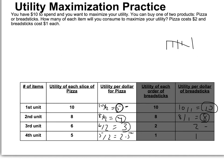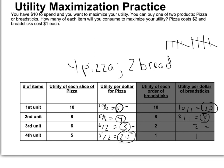The next largest unit — comparing the next pizza and the next breadstick — is still at 2 utils per dollar, so you take the third unit of pizza for $2, putting you at $8. Finally, you consume the fourth unit of pizza for $2, reaching $10. You've spent all your money and maximized your utility. The answer is you would purchase 4 units of pizza and 2 units of breadsticks, having maximized your utility per dollar through utility maximization.